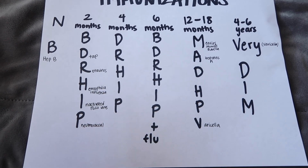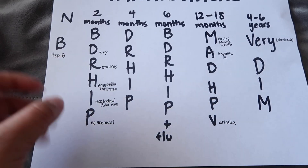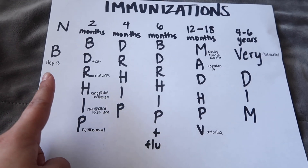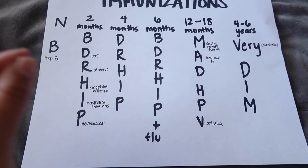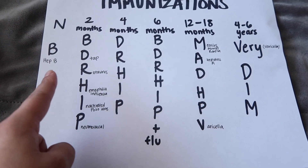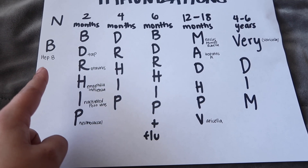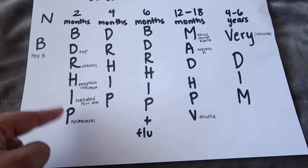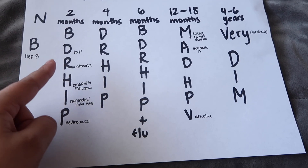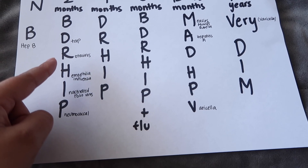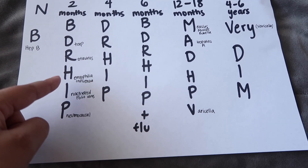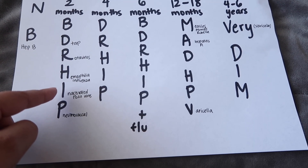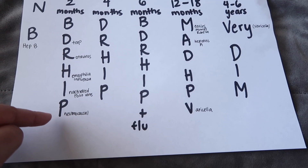What was really helpful was using acronyms or breaking it down into words as a better memory aid. For newborn, I just think 'newborn birth' — what's due at birth is Hepatitis B; it's only one vaccine. At two months, I use the mnemonic 'B Dr. Hip': B stands for Hepatitis B, D stands for DTaP, R is for Rotavirus, H is for Hib (Haemophilus influenzae), I is for Inactivated Poliovirus, and P is for the Pneumococcal vaccine.